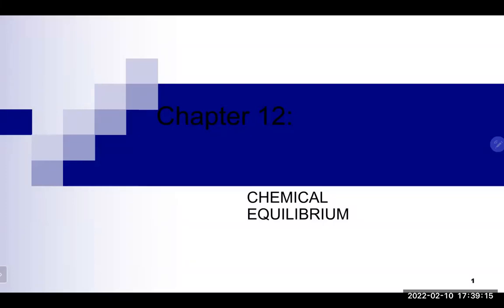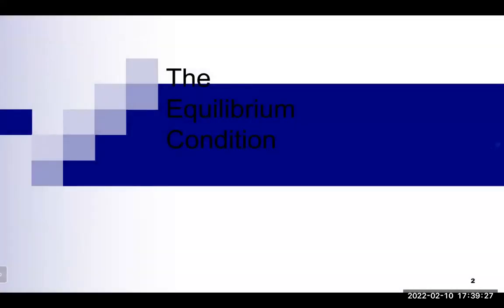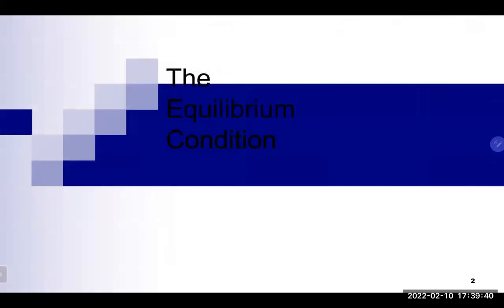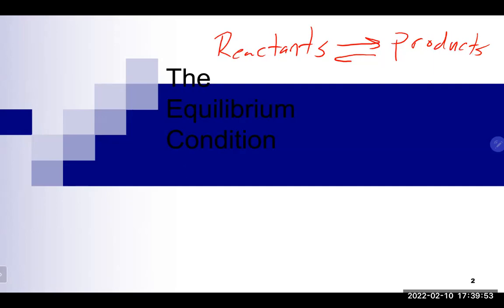The first chapter we're going to start with is chemical equilibrium. Chemical equilibrium really deals with a certain type of reaction — a reversible reaction. Reversible reactions have reactants that go to products, and what makes it reversible — you may remember talking about electrolytes — weak electrolytes have arrows heading in both directions. This type of reaction has two directions.